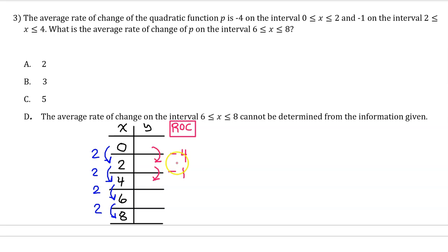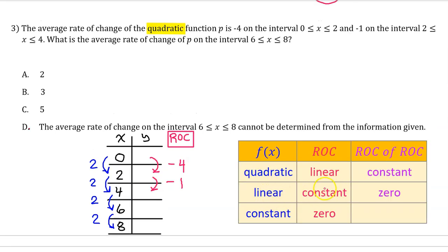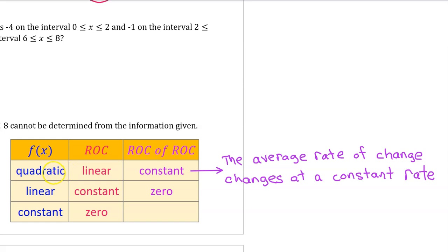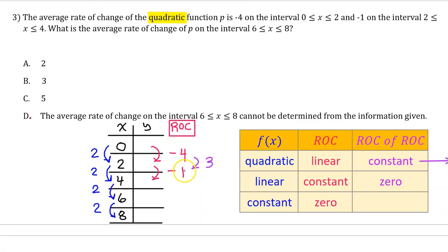We are told the average rate of change is negative 4 on the interval from 0 to 2, and negative 1 on the interval from 2 to 4. Since function p is quadratic, the rate of change of the rate of change is constant — the average rate of change changes at a constant rate. The average rate of change increases by 3 between the first two intervals. So for consecutive equal-length intervals, it will always increase by 3. The next value will be 2, and the one after that will be 5.